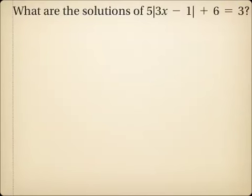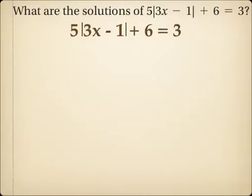The next example says: what are the solutions of 5 times the absolute value of 3x minus 1, plus 6, equals 3? Notice what is inside the absolute value is 3x minus 1. To isolate the absolute value, I need to get rid of the plus 6 and then the multiplication by 5, both of which are outside the absolute value symbol.